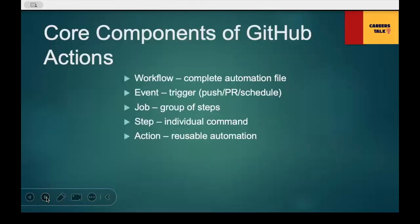What are the core components of GitHub Actions? You can think of this like an assembly line. Workflow: the complete automation file — the entire assembly line. Event: the trigger, like a push, pull request, or schedule — the switch that turns the line on. Job: a group of steps that run in a single runner — a major section of the line. Step: a command or script to execute — a single machine task. Action: a reusable automation created by GitHub or the community — like a pre-built robot. Knowing this structure helps us read pipeline files and communicate better with the team.